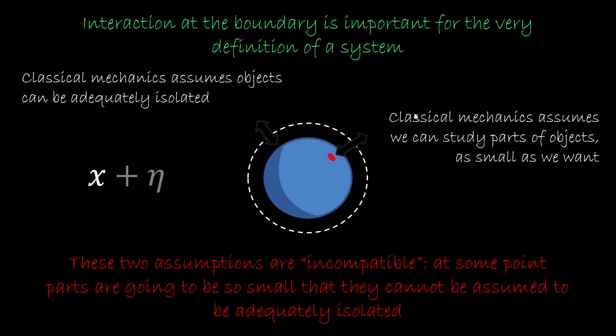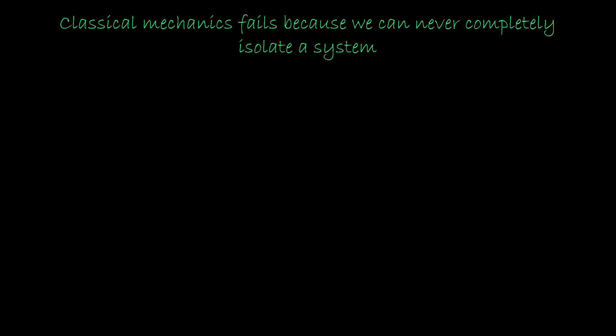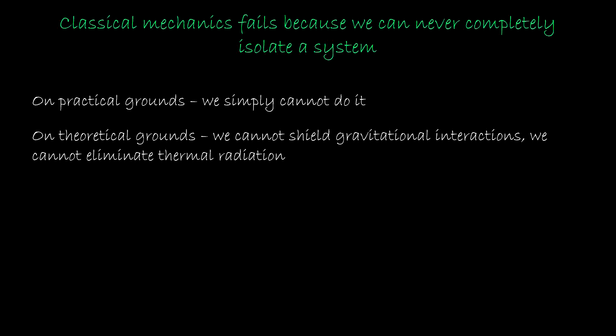These two assumptions are clearly in tension. While I may say that an object as a whole is adequately isolated, the smaller the part I consider, the greater the effect of the boundary interaction on that part. At some point, parts are going to be so small that isolation breaks down, and we have to take into account the interaction at the boundary. On practical grounds, we can perfectly isolate a system, but it's more than that. On theoretical grounds, we cannot shield gravitational interaction or eliminate thermal radiation.